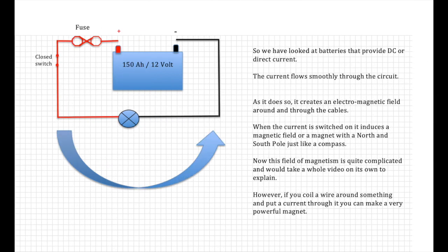So we've looked at batteries that provide DC, or direct current. The current flows smoothly through the circuit. As it does so, it actually creates an electromagnetic field around and through the cables. When the current is switched on, it induces a magnetic field, or a magnet, with a north and south pole, just like a compass.